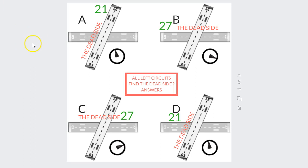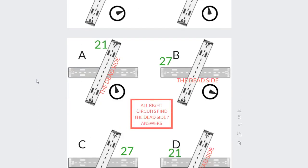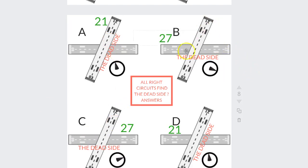The next slide is going to be all right-hand circuits and you need to do the same thing — identify the wind direction, identify the active, and then identify the dead side as if you were overhead at 2,000 feet. Pause the video and try and identify them. Welcome back. Here are the answers. For example, you're flying overhead and you identify that the wind is blowing in that direction, so you work out that coming in that direction is going to be about 2-7. These are all right-hand circuits, so you visualize yourself flying down there and turning right — that becomes the live side, which means the other side is the dead side.